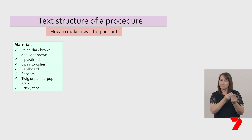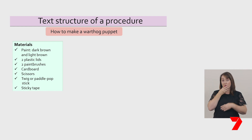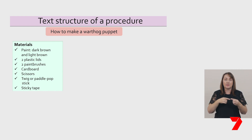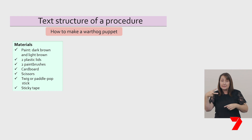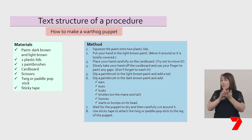What do I need to make my puppet? I need two colours of paint — dark and light brown — plastic lids, paint brushes, cardboard, scissors, a twig or paddle pop stick, and sticky tape. A procedure also includes a method, which is a series of ordered steps or instructions that are often numbered. Formal language is used so the written instructions are clear and can be followed easily by anyone who wants to read them.